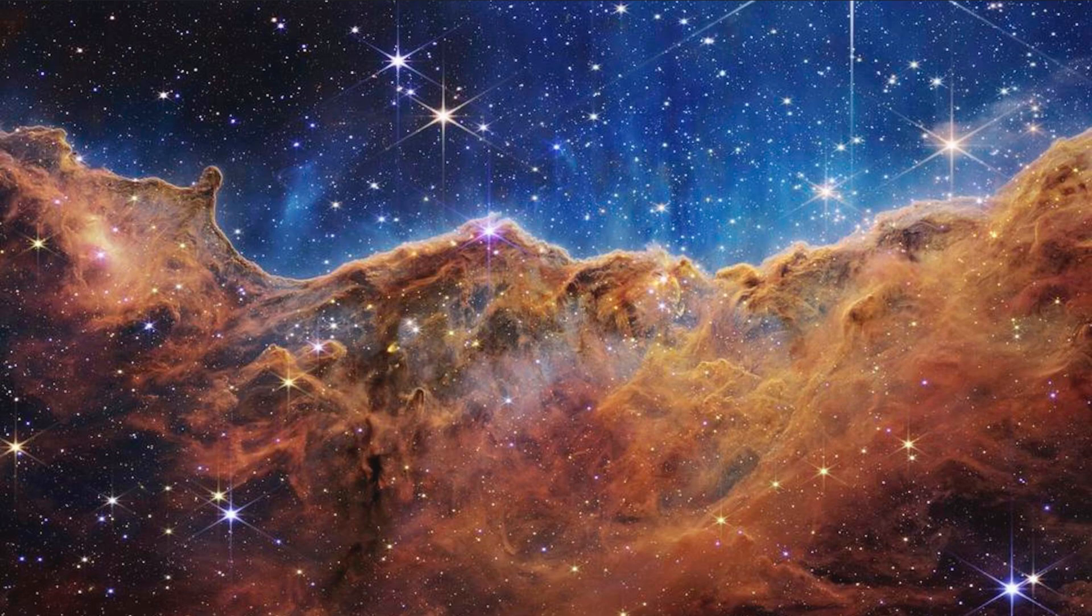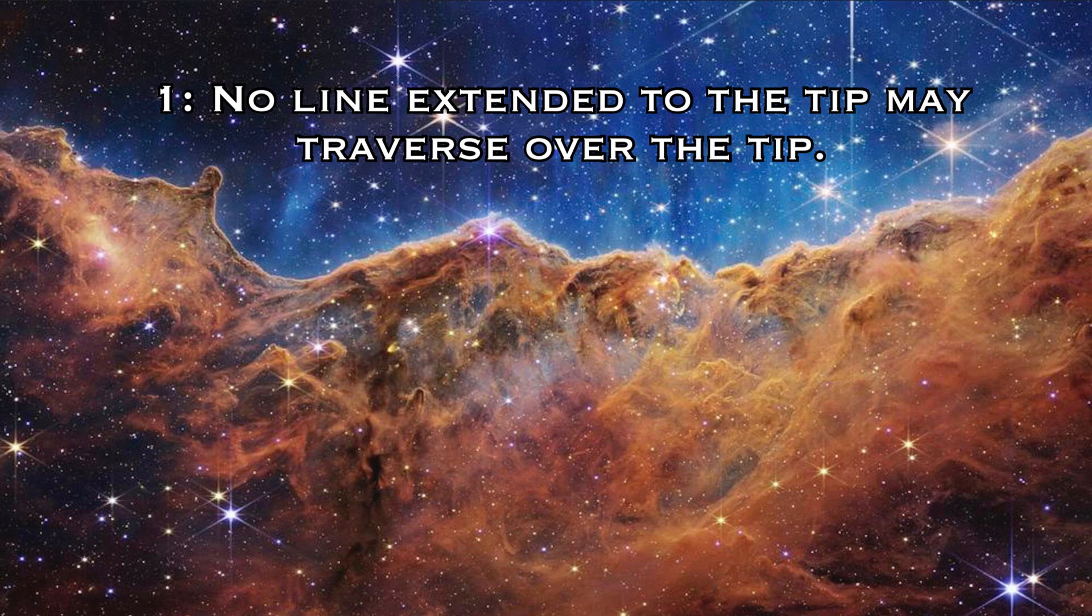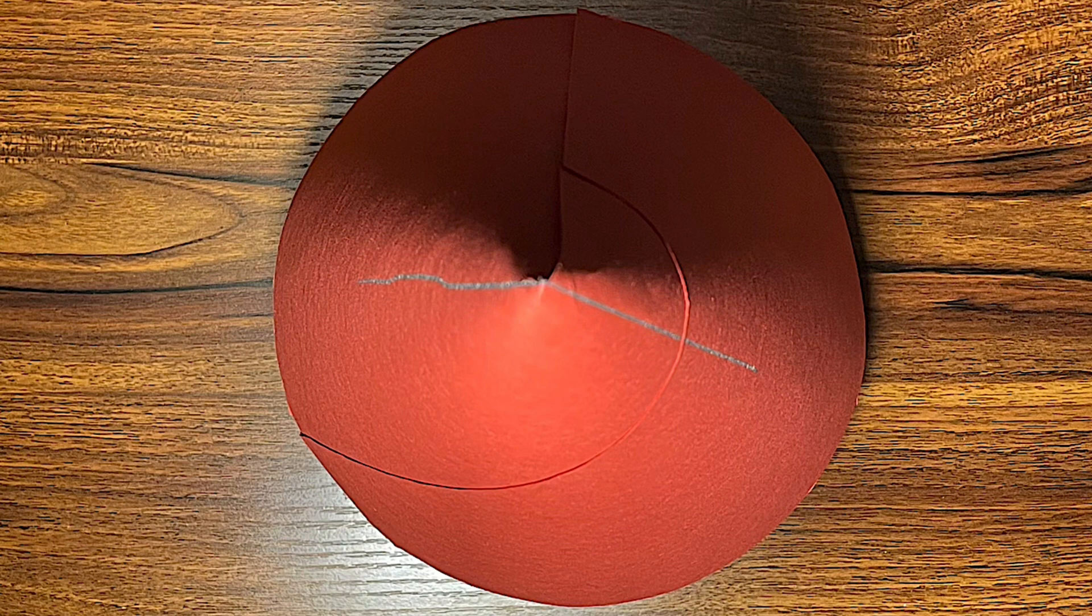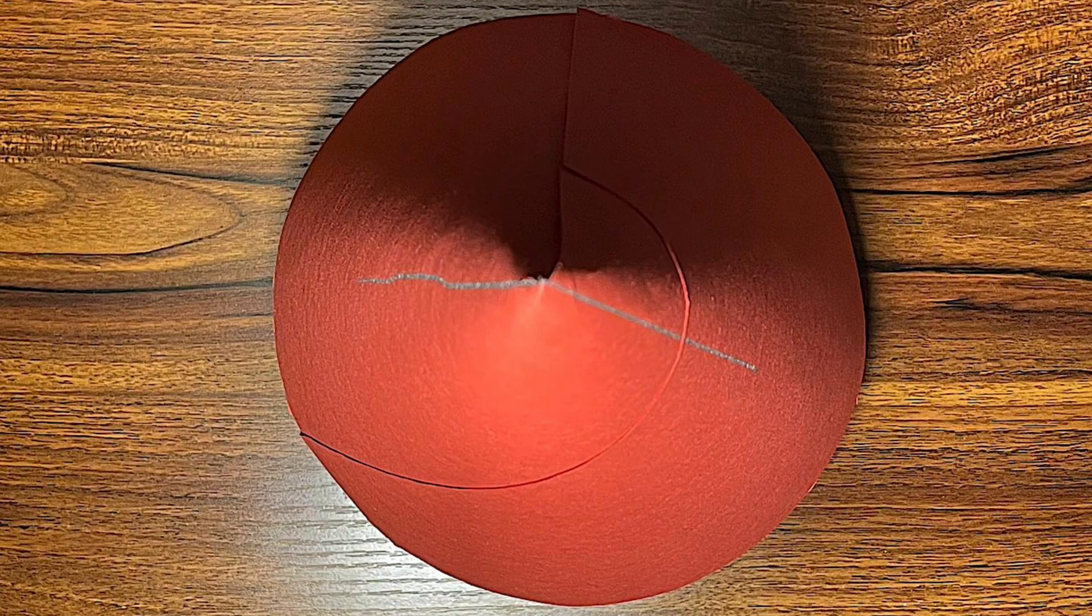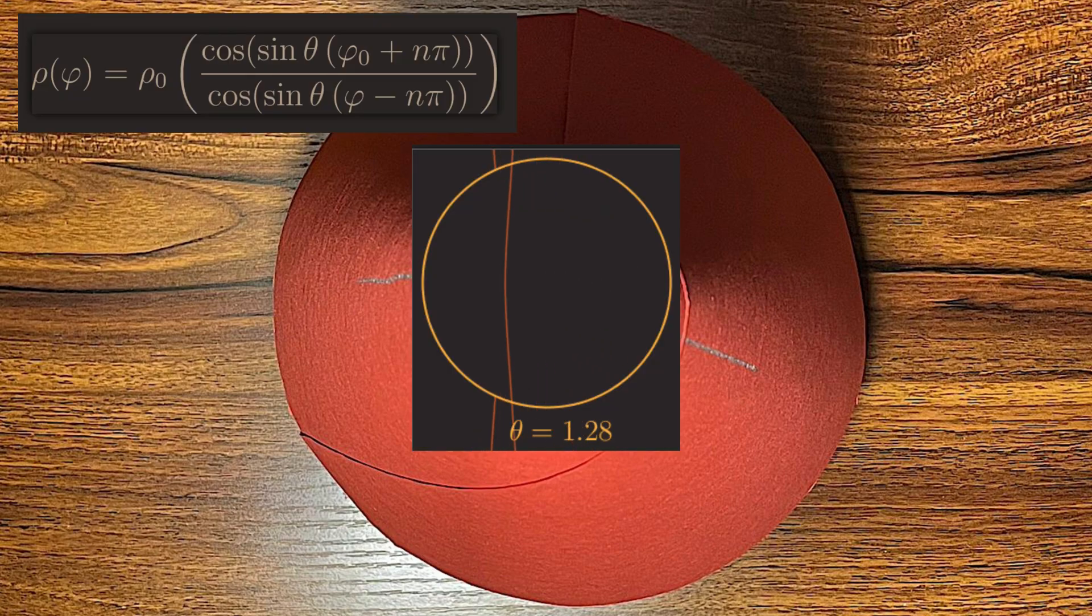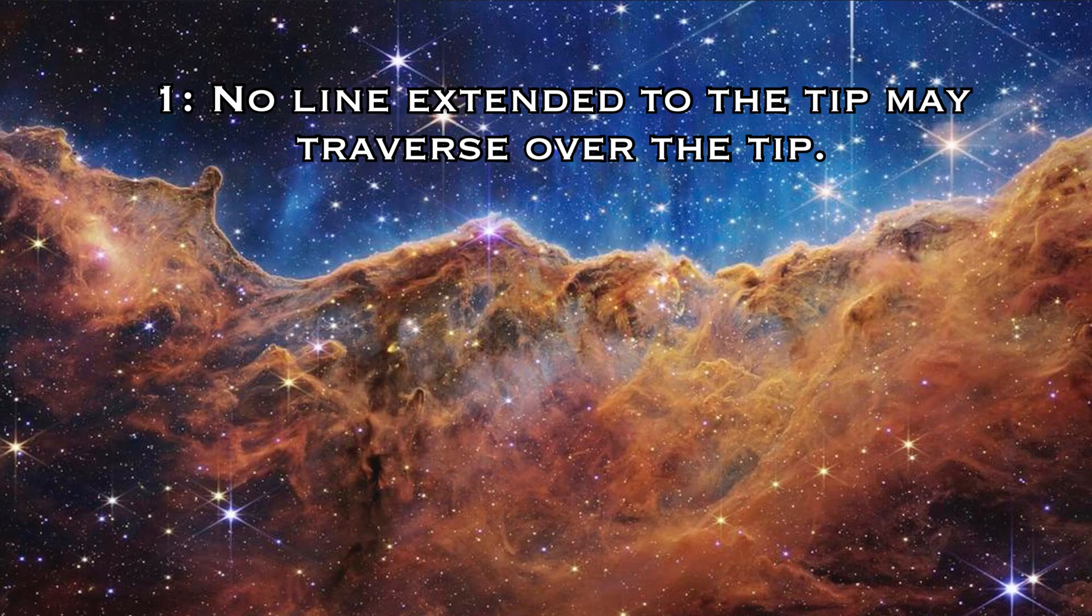Before we attempt to answer that, there are three things that we must keep in mind in order to make this analogy perfect to a black hole in three dimensions. The first is that no line extended to the tip may traverse over the tip. This is because singularities cause paths to become incomplete and inextendable locally. Also, geodesic equations go haywire when paths reach the tip. But mainly, it's because nothing can escape a black hole.